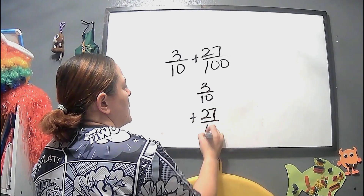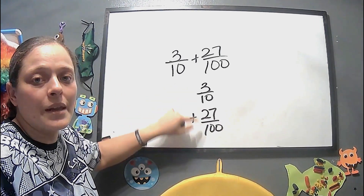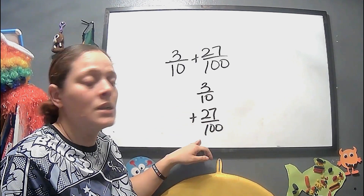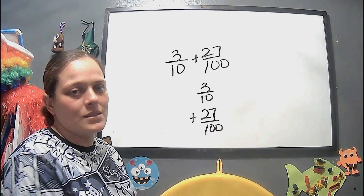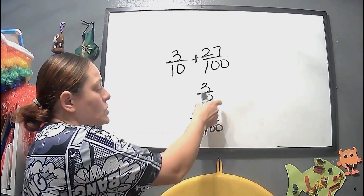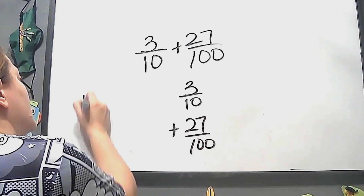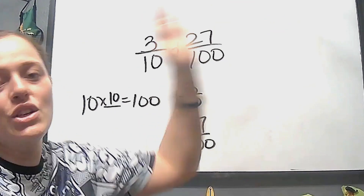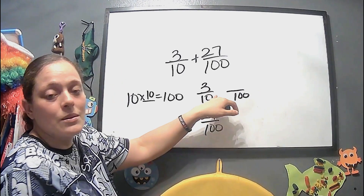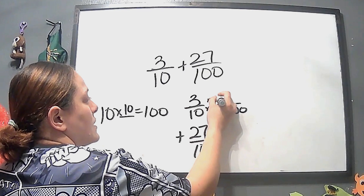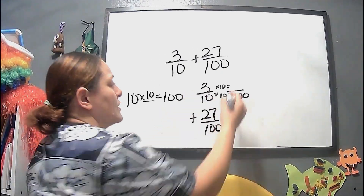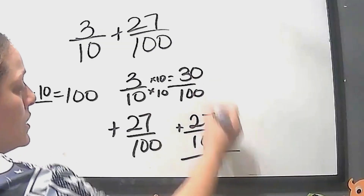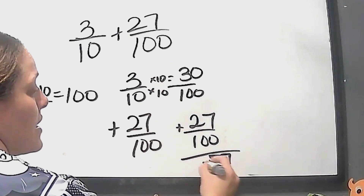Next problem: 3 over 10 plus 27 over 100. I'm going to stack it to make it easier. We have to change the denominators so we can add them. It's easier to change the 10 into 100 rather than multiplying 100 times 10. So 10 times 10 equals 100 — and remember, whatever you do to the denominator you do to the numerator. So 3 times 10 is 30, giving us 30 over 100. Now we add 27 over 100: 30 plus 27 is 57 over 100.